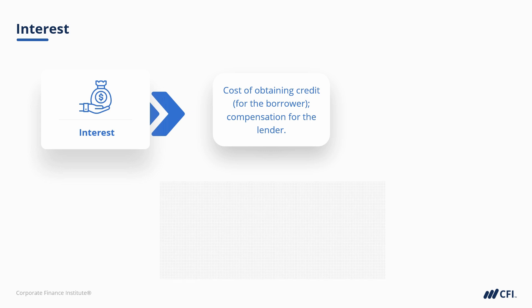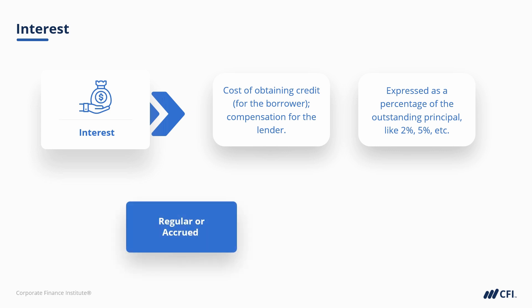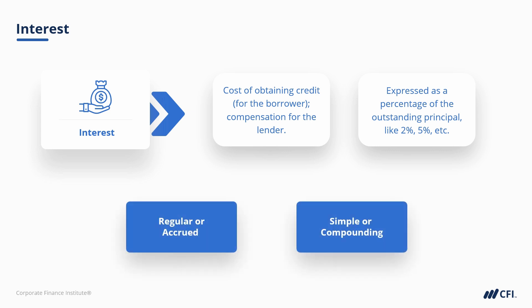With interest, we're looking at the fee or expense being charged as the cost of making the loan, paid over and above the principal amount. Interest compensates the lender for taking on the risk of lending out that money, and is calculated as a percentage of the outstanding loan principal. As a general rule, the higher the risk of the borrower or the nature of the transaction, the higher the interest rate will be. Interest is expressed as a percentage — like 2%, 5%, 10% — and is most commonly quoted as an annual rate, even if payments are made monthly. There are a few different types of interest: it's either regular or accrued, and either simple or compounding.